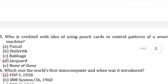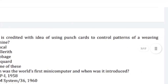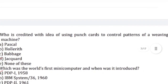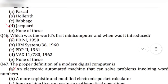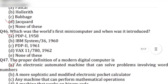Question 45: Who is credited with the idea of using punch cards to control patterns of a weaving machine? Answer is option D, Jacquard. Question 46: Which was the world's first minicomputer and when was it introduced? Answer is option A, PDP-1, 1958.